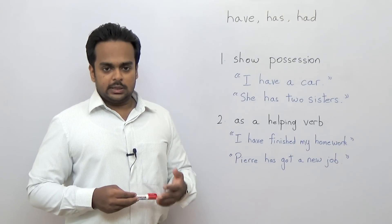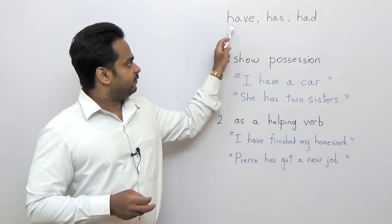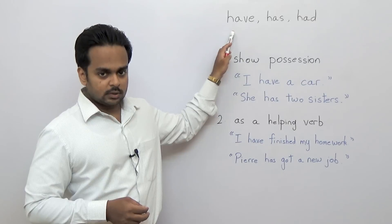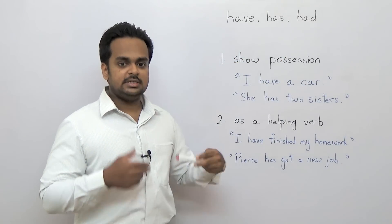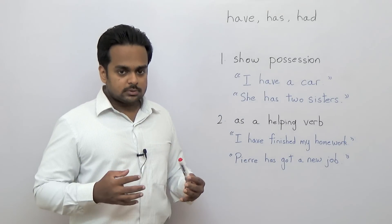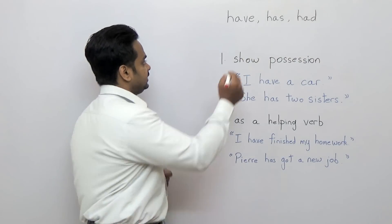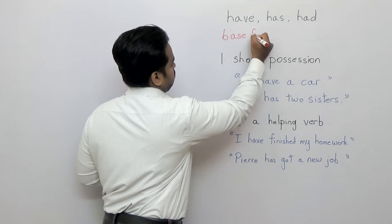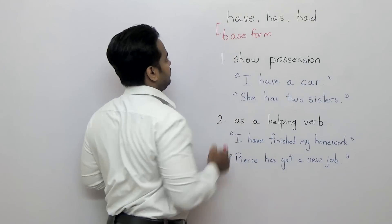Now before we get into the rules, remember that the verb 'have' is the base form. That means that 'has' and 'had' are not different verbs — they're all just different forms of the same verb, which is 'have'. So we're going to call this the base form.